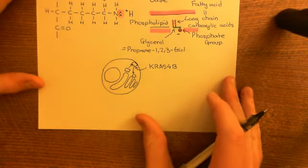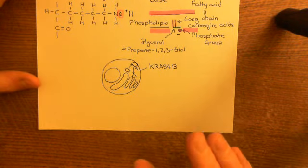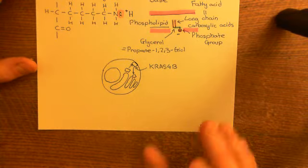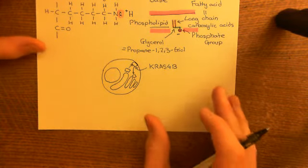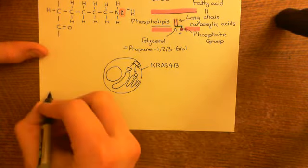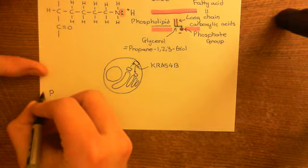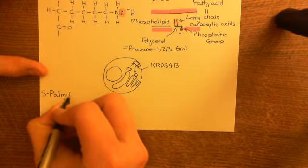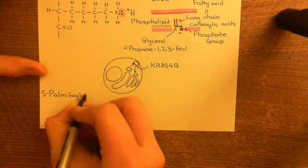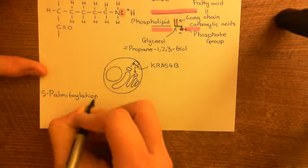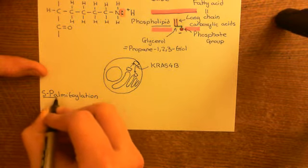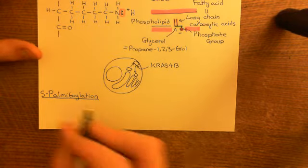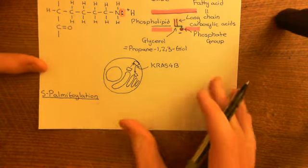We're now going to discuss S-palmitoylation of proteins, because this is important for the other RAS proteins. Remember, there is another form of palmitoylation called N-palmitoylation, but it is much less common. The form of palmitoylation that occurs to the RAS proteins is S-palmitoylation.